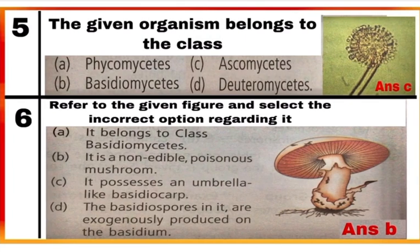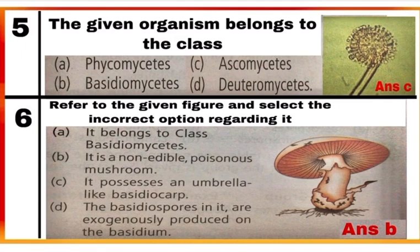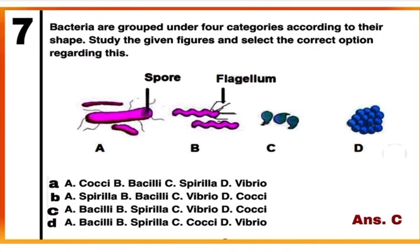Question 5: The given organism belongs to which class? The given figure is of Aspergillus, which belongs to class Ascomycetes and kingdom Fungi. Correct option is C. Question 6: Refer to the given figure and select the incorrect option regarding it. The given figure is of Agaricus, which belongs to class Basidiomycetes. It has an umbrella-like basidiocarp. In Agaricus, basidiospores are produced exogenously on the basidium, and they are edible and non-poisonous. The incorrect option is B — stating it is a non-edible poisonous mushroom. Mark B.